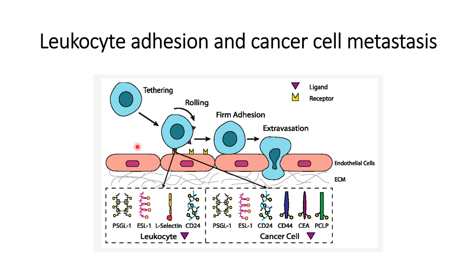In this video we will discuss how this happens. At the site of injury, whenever the injury occurs, the endothelial cells near the site of injury express receptors that can bind P-selectin, E-selectin, and L-selectin. Each selectin has a different role.